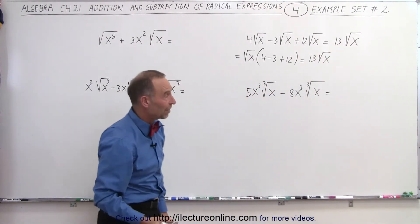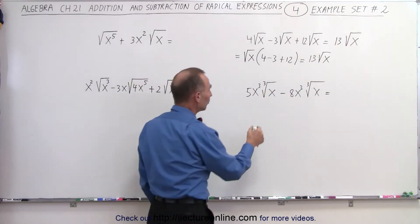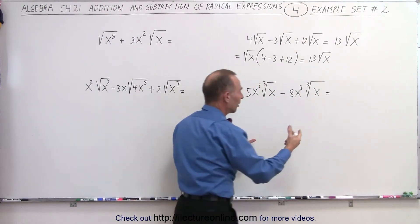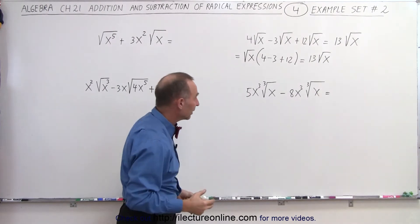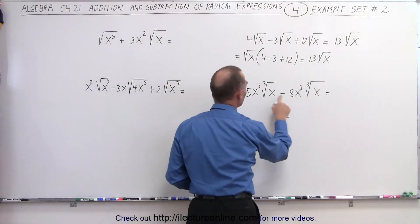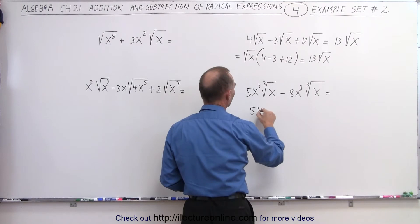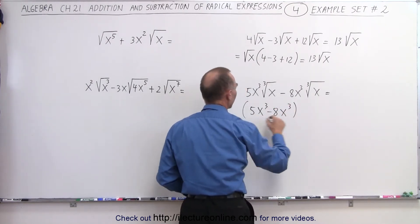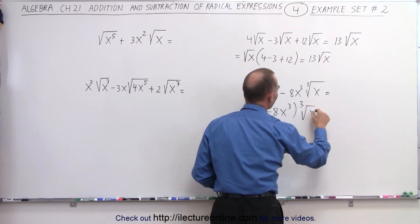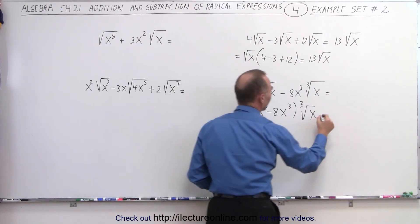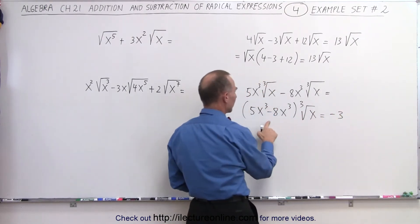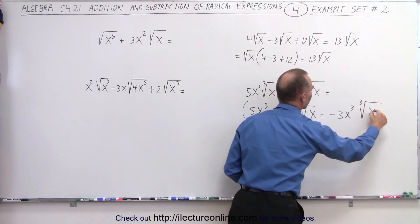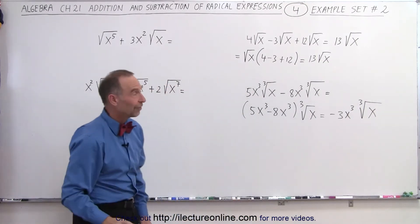So either way, we'll get the same answer. Here again, notice we have the cube root of x and the cube root of x, so they're the same — they're alike. That means we have 5x cubed minus 8x cubed, and when we factor out the cube root of x and combine these, that is equal to minus 3 times x cubed times the cube root of x. And that's how you simplify that one.